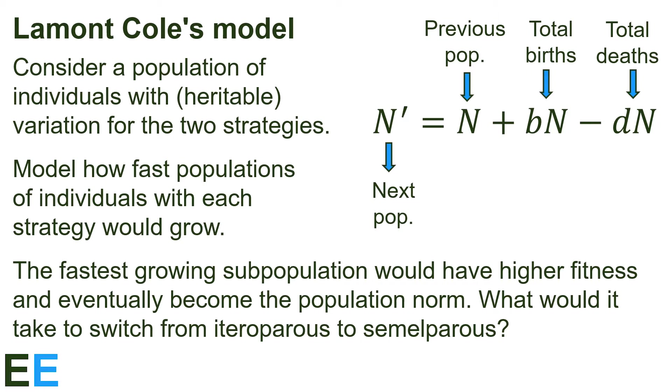We could compare populations that have different values for b and d by starting them from the same initial population N and then calculating what the value of N prime would be. Whichever population gets the higher N prime value would be the one that grows faster. If we think of a combined population, a population with two subpopulations, the fastest growing subpopulation would have higher fitness and eventually become the population norm as it replaces the slower growing subpopulation.